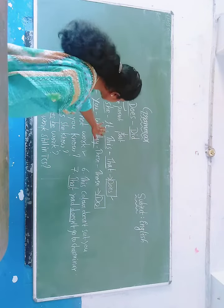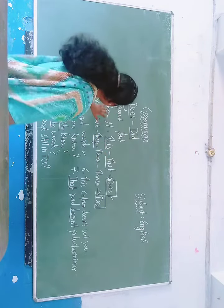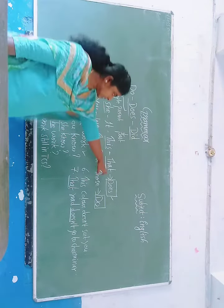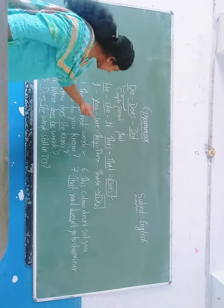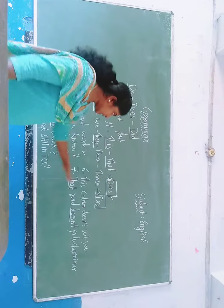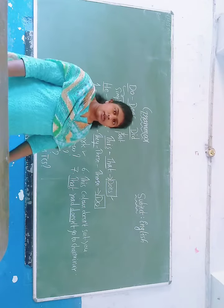You should know that whenever this, that, and he, she, if it is there, we have to use only does. And when there is they, you, we, I, these, those, we have to use do children.